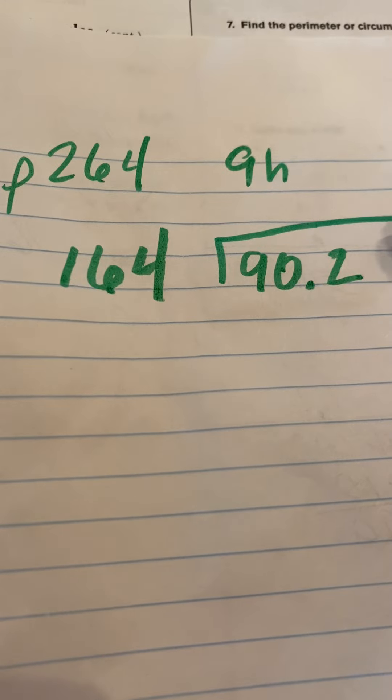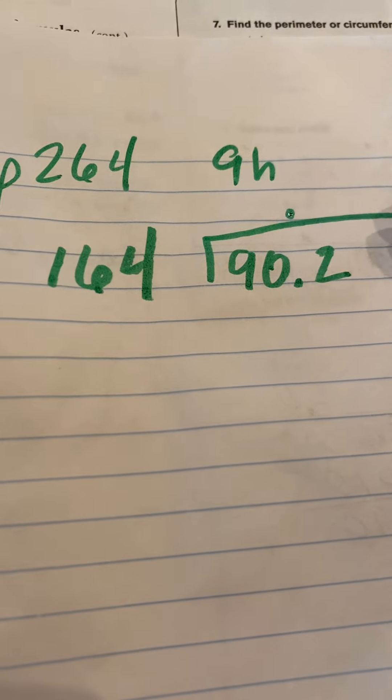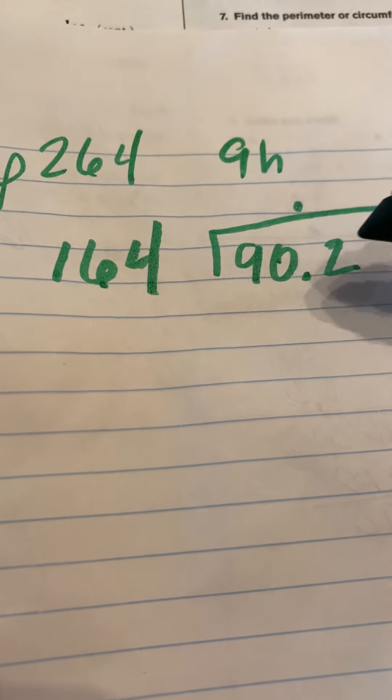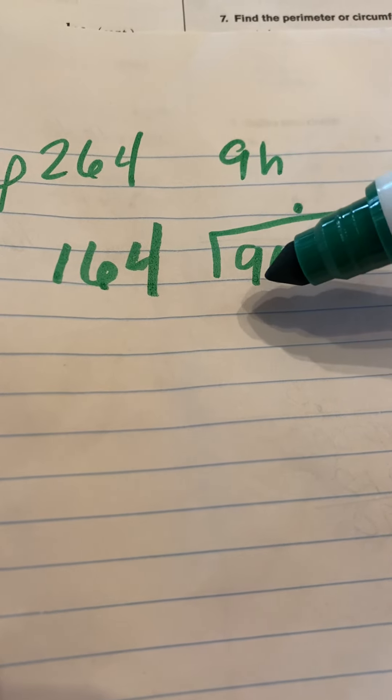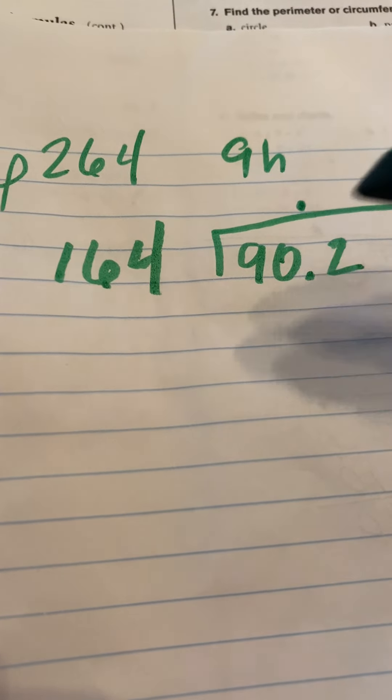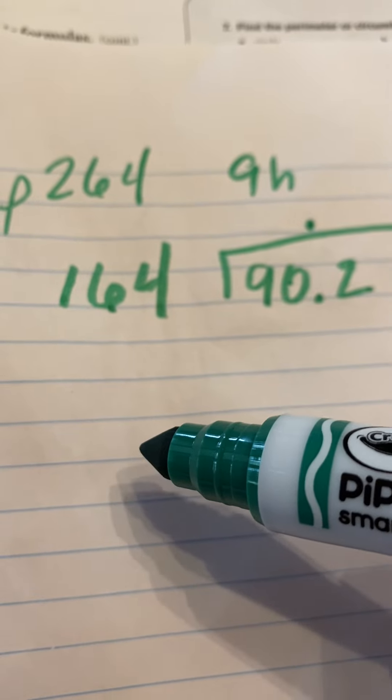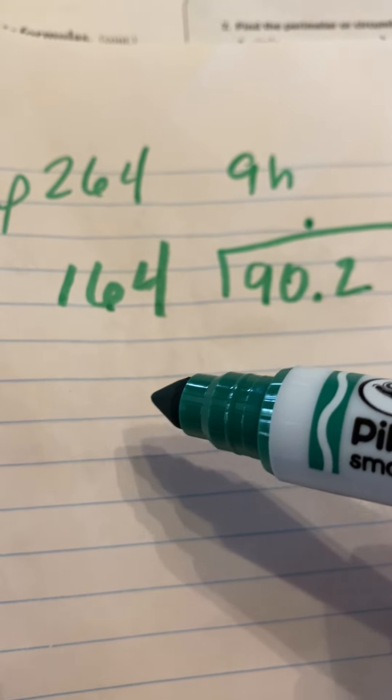So little number goes on the inside, big number goes on the outside. So we have to first figure out how many times, let's bring our decimal up. How many times does 164 go into, it doesn't go into 90, but 902.